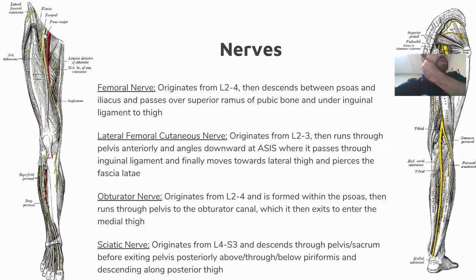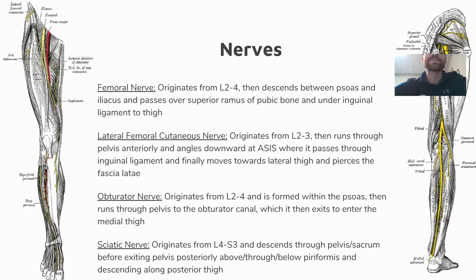The obturator nerve originates from L2 through L4 and is formed within the psoas, then runs through the pelvis to the obturator canal, exiting to enter the medial thigh — responsible for much of the inner thigh pain and innervation of the hip adductors. The sciatic nerve originates from L4 through S3, descends through the pelvis and sacrum, exits posteriorly above, through, or below the piriformis as discussed, and then descends along the posterior thigh.